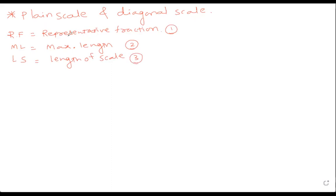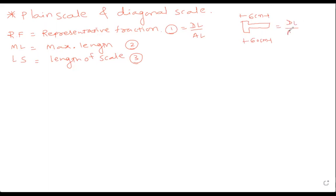Representative Fraction is drawing length upon actual length. For example, if you have a T-scale and you're drawing it as 6 centimeters, but in actual it is 60 centimeters — then RF is 6 cm upon 60 cm, which is 1 upon 10.